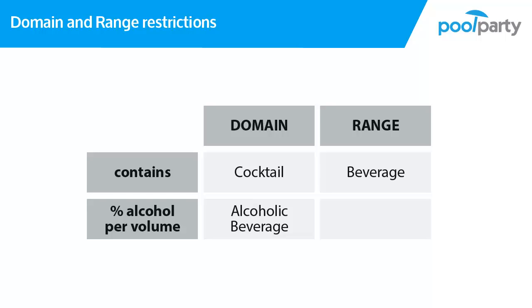Now that you know what domain and range restrictions are, you would be able to tell which triples can be built with an ontology when you get a table of the domain and range restrictions of all the attributes and relations. This is also how ontologies are described in PoolParty. When you use PoolParty to build your ontologies, PoolParty will take care to assign the correct domain and range restrictions to your classes, relations and attributes.